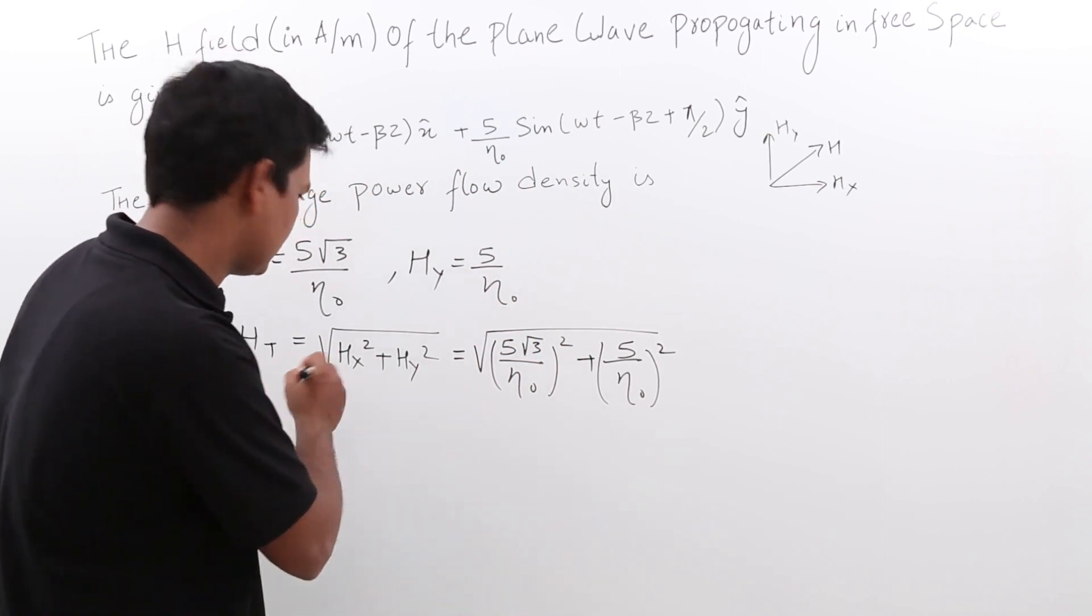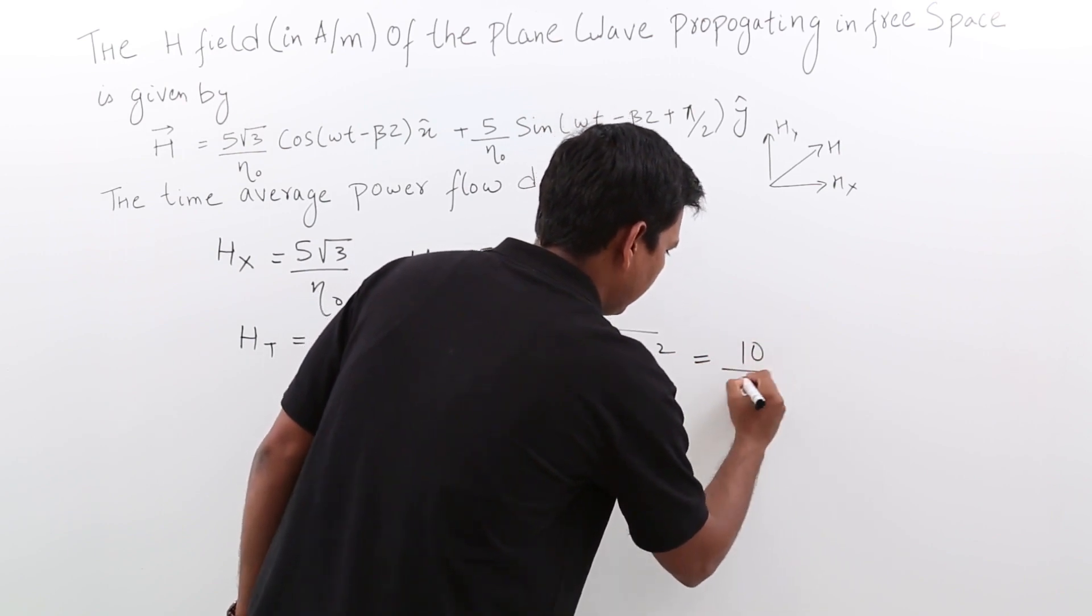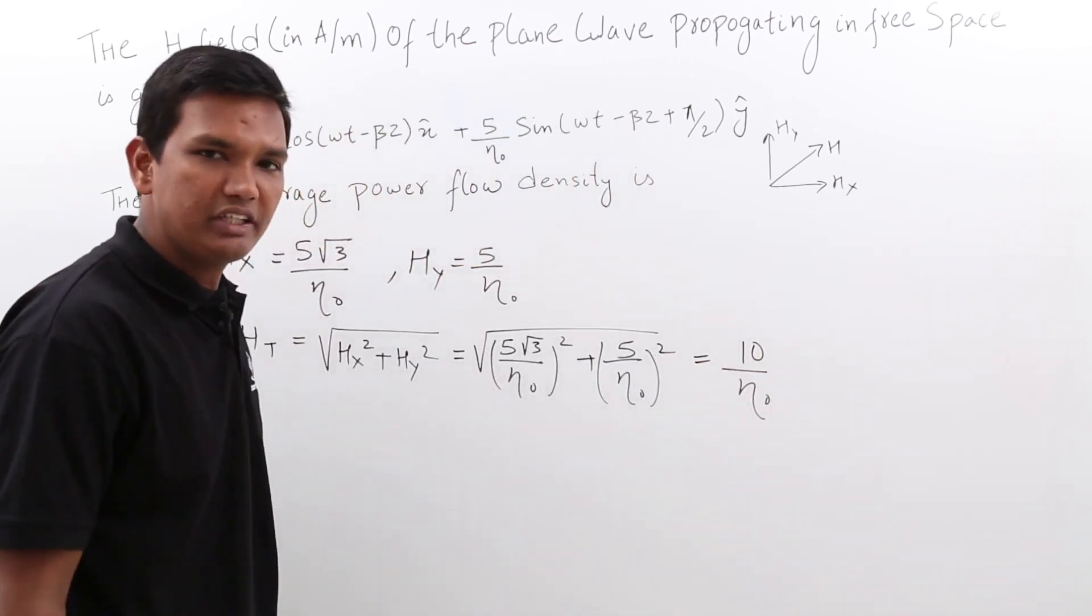So if I solve this, what will be H t? H t would be 10 by n naught. So I got the H t.